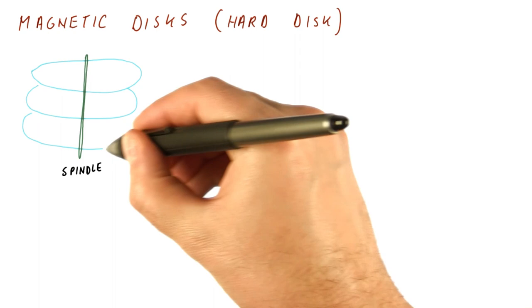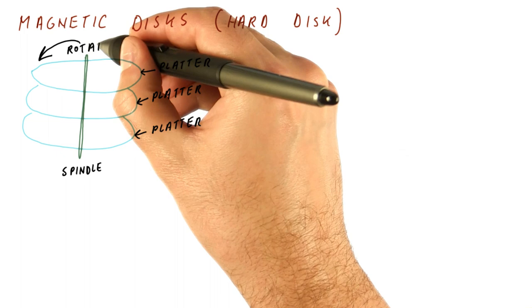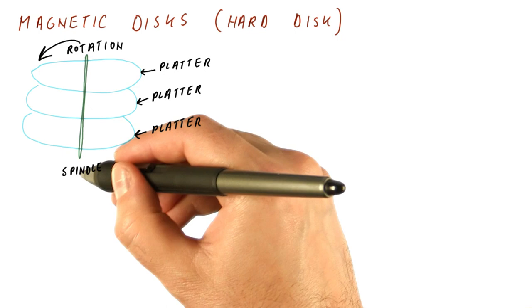A magnetic disk has a spindle to which we can attach so-called platters. All of the platters are attached to the same spindle and rotate at the same speed. Let's say in this direction. There is a motor here that really drives the spindle to rotate and that causes all the platters to rotate at the same speed.